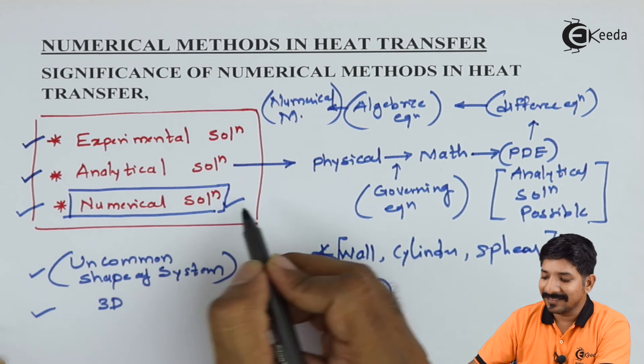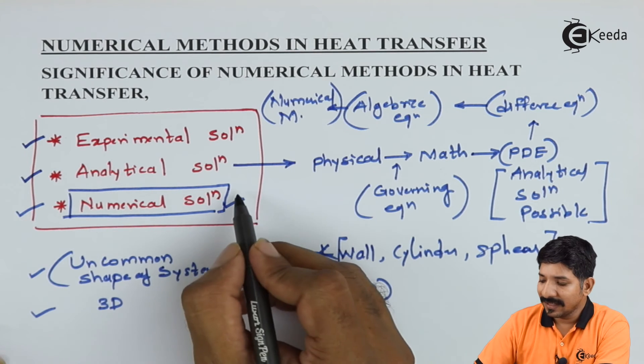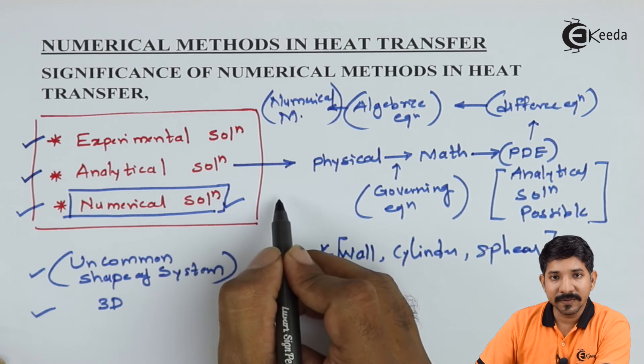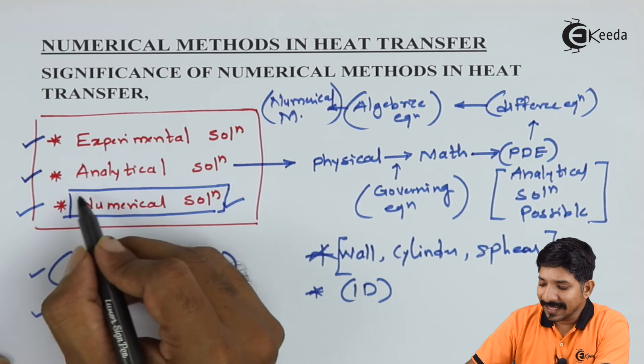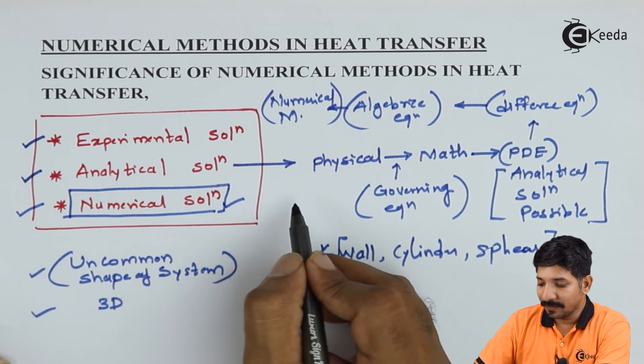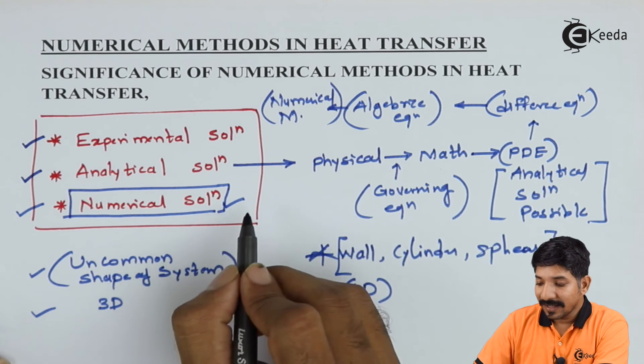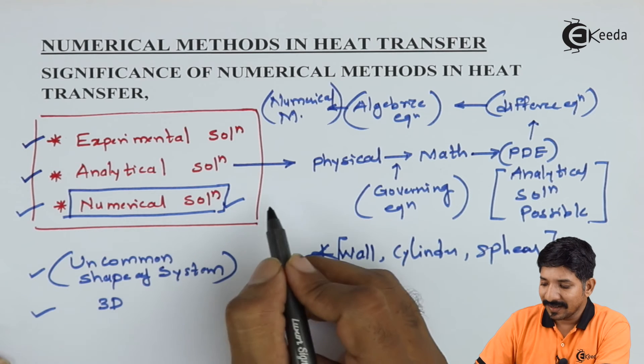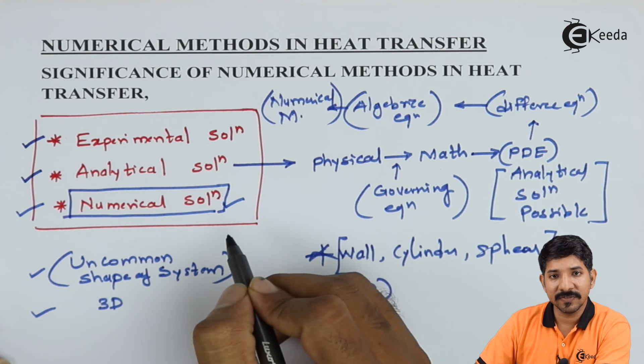That is why the numerical methods are essential. These numerical methods are easy to use. We can get the solution of any given problem using numerical methods. We can even find the intermediate parameters in case of numerical methods. Hence, in industry, the use of numerical methods is increased in past few decades.